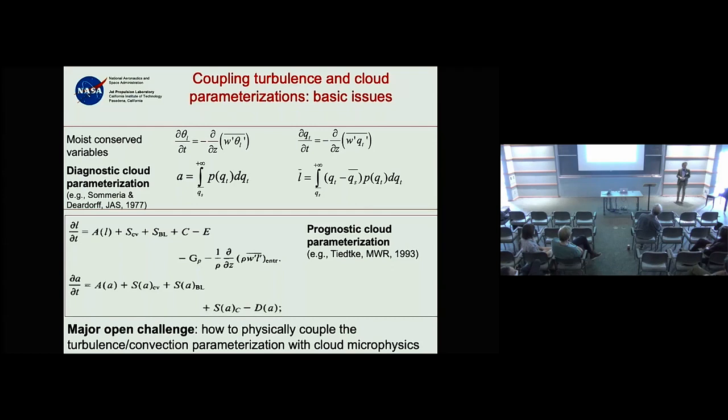Most global weather and climate models don't use moist conserved variables — they use potential temperature or dry static energy. The entire boundary layer community mostly uses conserved variables. We don't even have agreement on what the right temperature variable for the first law of thermodynamics should be.